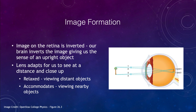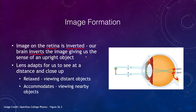We want to look at how the image forms. The image is formed on the retina in the back. Light rays coming from the top of the tree travel through the lens and end up at the bottom, while light rays from the bottom end up at the top. So the image on the retina is actually inverted — it is upside down. When that information travels to the brain, our brain inverts the image again, giving us the sense that the object is right-side up.